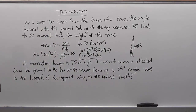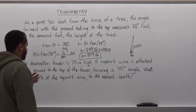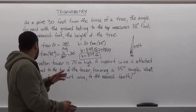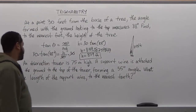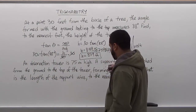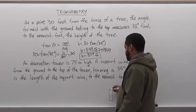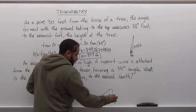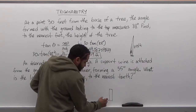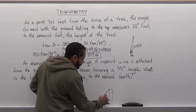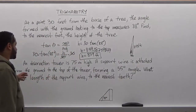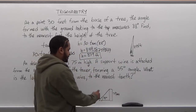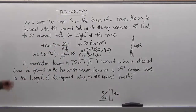For our second problem: we have an observation tower 75 meters high. A support wire is attached from the ground to the top of the tower, forming a 55 degree angle. What is the length of the support wire to the nearest tenth of a meter? The tower is vertical, the wire extends to the ground at 55 degrees. The tower side is 75 meters, and we'll call the support wire side S.